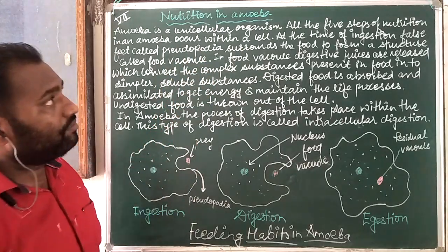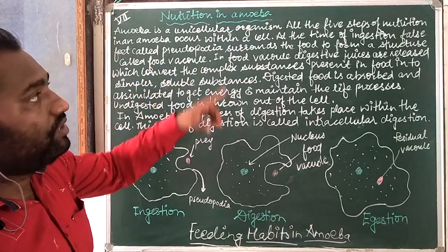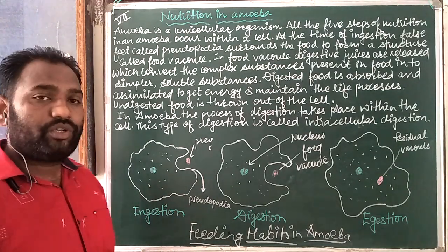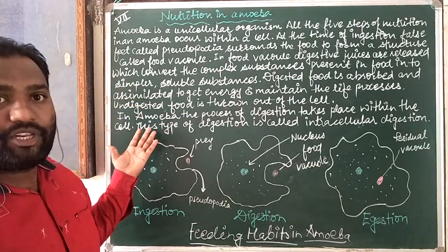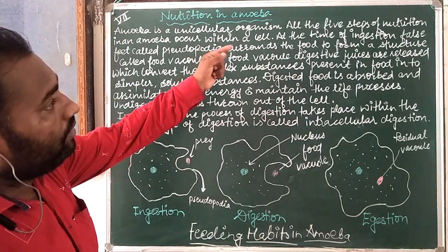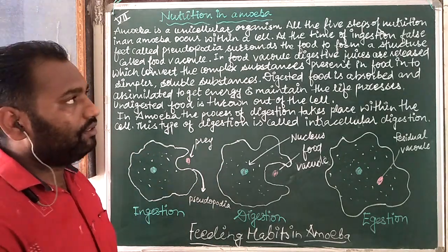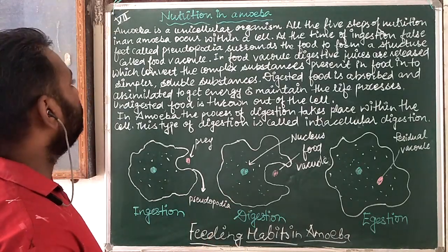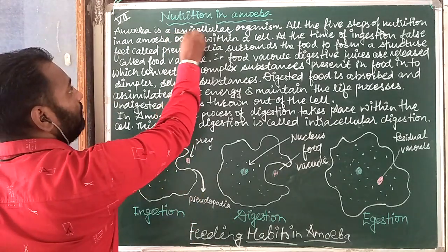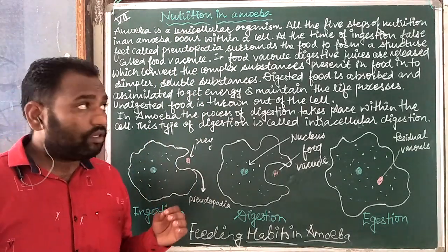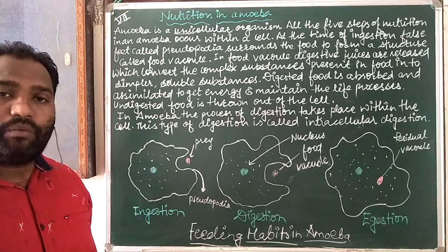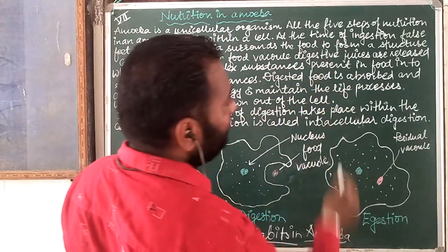Amoeba is a unicellular organism. All five steps of nutrition in an amoeba occur within a cell. We already discussed the five steps of nutrition: ingestion, digestion, absorption, assimilation. All five steps occur within a cell because amoeba is unicellular — 'uni' means one, 'cellular' means cell — one cell contains the organism. Amoeba has only one cell to perform every activity.